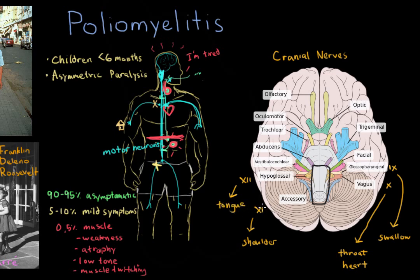So not only the muscles of the arms and legs are affected — some patients get bulbar palsy, the term for this cranial nerve defect. When these cranial nerves are affected, a patient may have difficulty talking, difficulty swallowing, and heart problems. This cranial nerve paralysis is known as bulbar palsy — 'bulb' referring to the brain stem, and 'palsy' meaning paralysis.